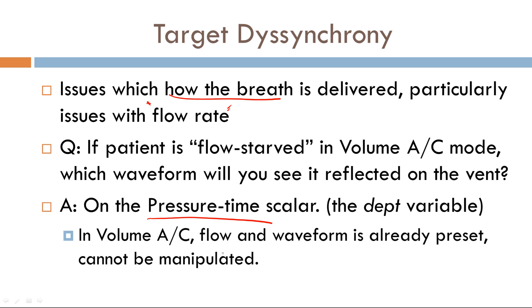Remember, in volume AC, the flow is your target variable. It's preset by you, the operator, and it cannot be manipulated. However, if you're in volume AC, the pressure scalar will be affected in target dyssynchrony. So let's take a look.